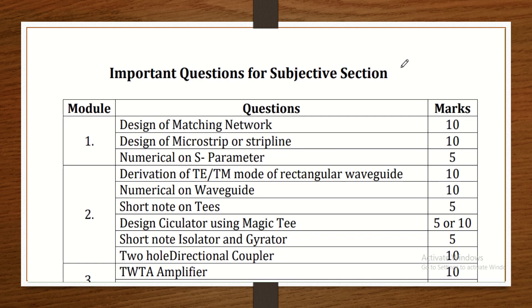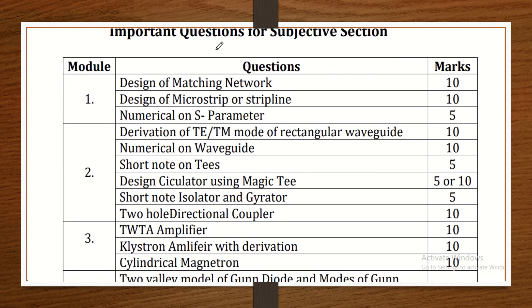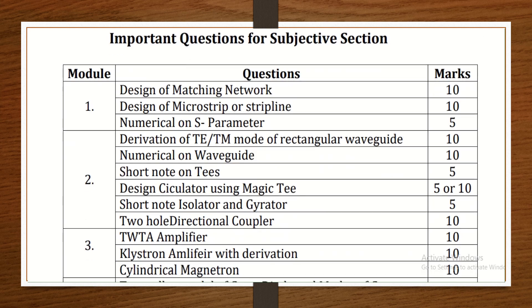Here I have some important questions set ready for the subjective part. We should be able to attempt all the questions because in the examination we have a choice. If you have a 10-mark section, you need two questions. If it is a 12-mark section, attempt all questions. For 5-mark questions, attempt four questions.